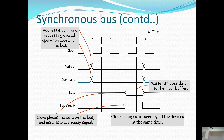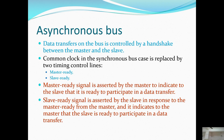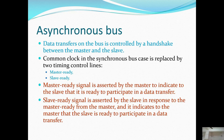In the asynchronous bus, data transfer is controlled by a handshake between master and slave. The common clock of the synchronous bus is replaced by two timing control signals: master ready and slave ready. The master ready signal is asserted by the master to indicate to the slave that it is ready to participate in a data transfer. The slave ready signal is asserted by the slave in response to master ready, indicating to the master that the slave is ready for the data transfer.